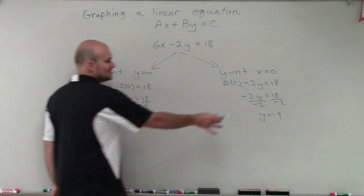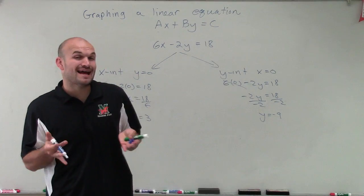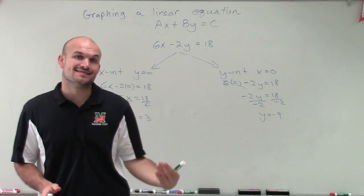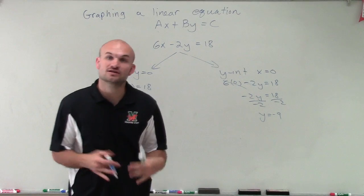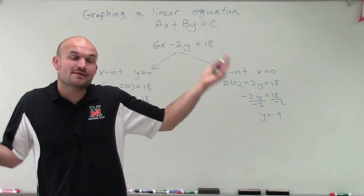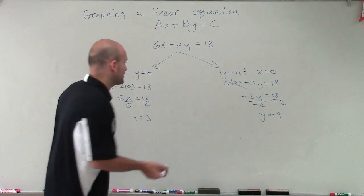So now I have what the x-intercept is and what the y-intercept is. And remember, the x-intercept is where the graph crosses the x-axis. And the y-intercept is where the graph crosses the y-axis. And that's all I need. As long as I have my two points and two intercepts, I can connect them to create my graph.